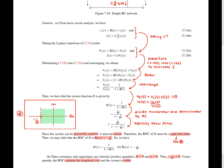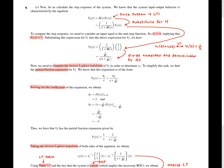Now we proceed to part C of the example. Recall that in part C, we're asked to find the step response of the system. We recall that the system is described by big V2 equals big H times big V1. We substitute the system function found in part A, and because the input is the unit step function, we substitute for big V1 the Laplace transform of the unit step function, which is 1 over S. Then we divide the numerator and denominator by RC to get the next line.